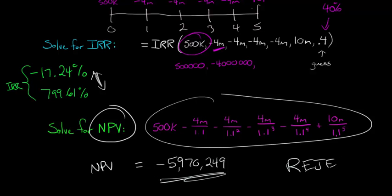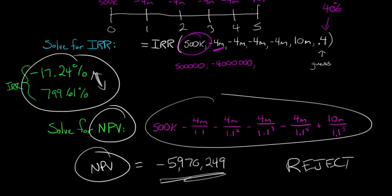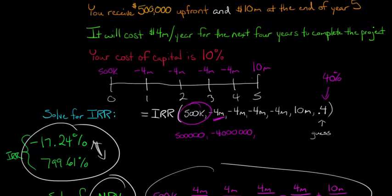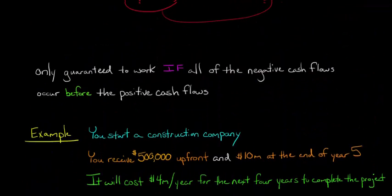So again, don't get into, if you've got more than one IRR, regardless of what they are, just ignore them and just go and calculate the net present value. And it's important if you're wondering why do we even have this situation where we have multiple IRRs.